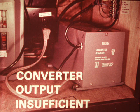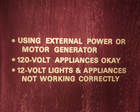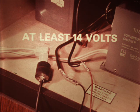Insufficient converter output could be indicated by three conditions occurring at the same time: one, the motorhome is using external power or the motor generator; two, the 120 volt appliances are running all right; and three, the 12 volt lights become dim and 12 volt appliances are not operating correctly. If you suspect that the converter is not functioning properly, plug it into a reliable power source and measure the voltage at the converter outputs with a voltmeter. If you don't get a reading of at least 14 volts, replace the unit with a new converter.